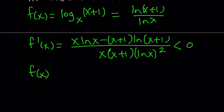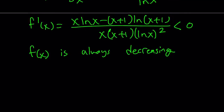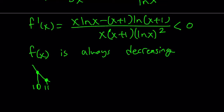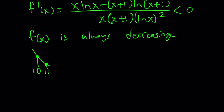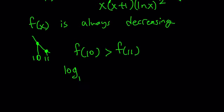Since f(x) is always decreasing, and we're evaluating it at x = 10 and x = 11, the value at 11 is definitely smaller than the value at 10. So we can safely say that f(10) > f(11). Going back to the definition of f, this implies that log₁₀(11) is always going to be greater than log₁₁(12). So the larger number is just the first one.